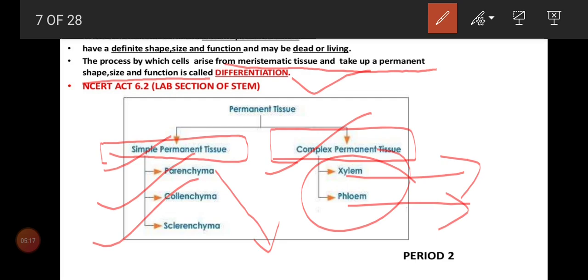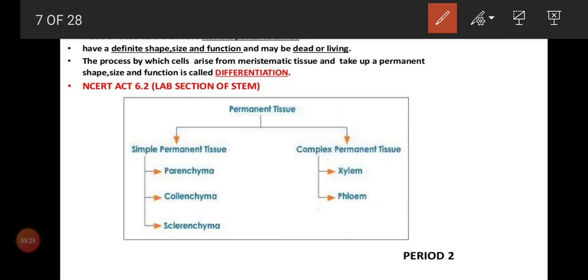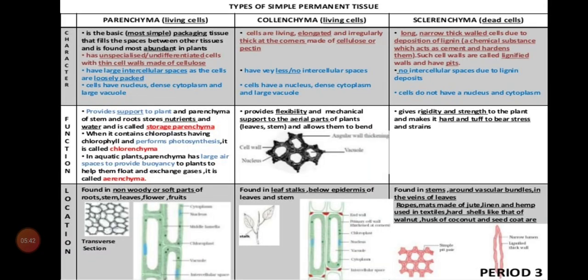Please write all those characteristics in your note and try to learn all those things. Next we will move on to the detailed account of simple permanent tissues. In this class we will see simple permanent tissues alone. Next class we will learn complex permanent tissue. We are going to learn only simple permanent tissue — parenchyma, collenchyma, and sclerenchyma.